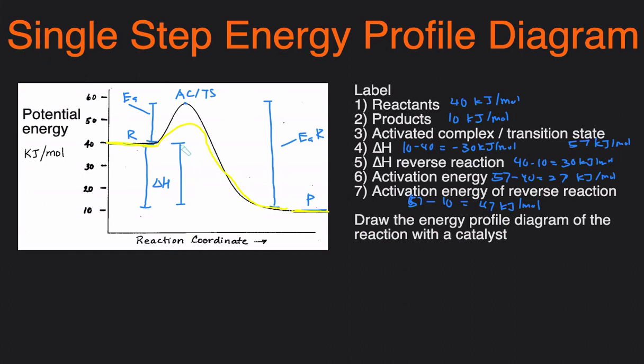So this right here is the energy profile diagram for an exothermic reaction because you can see that the energy was going down. You can also see that the delta H was negative.